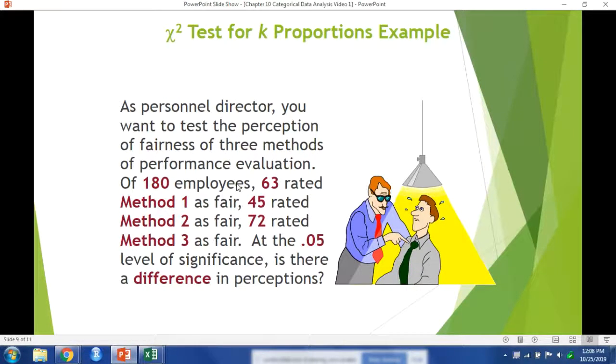Here's an example. As personnel director, you want to test the perception of fairness of three methods of performance evaluation. Of 180 employees, 63 rated method one as fair, 45 rated method two as fair, and 72 rated method three as fair. At the 0.05 level of significance, is there a difference in perceptions?